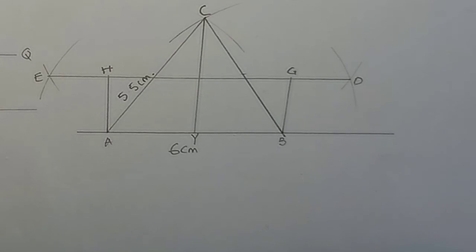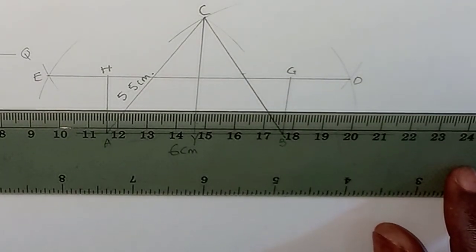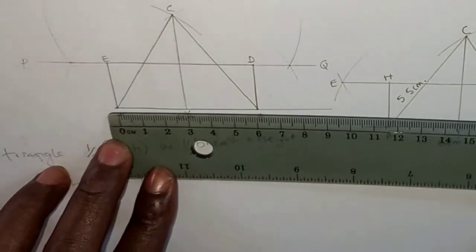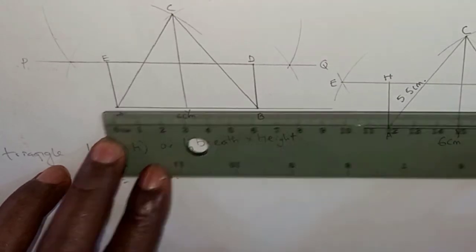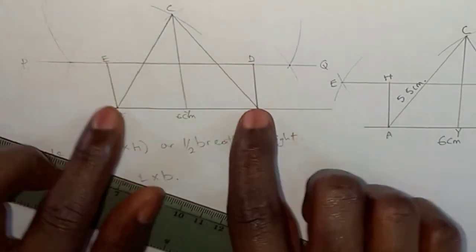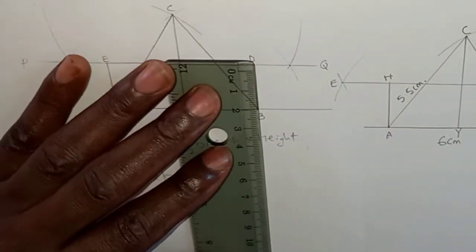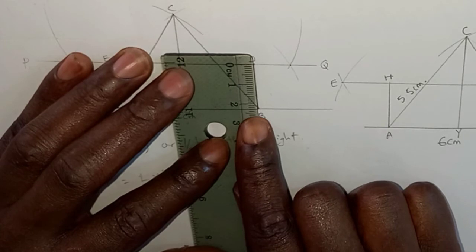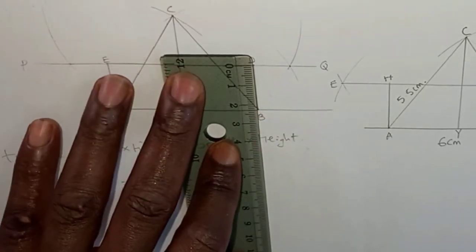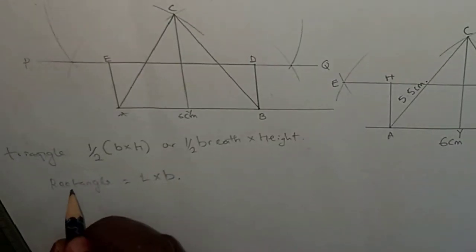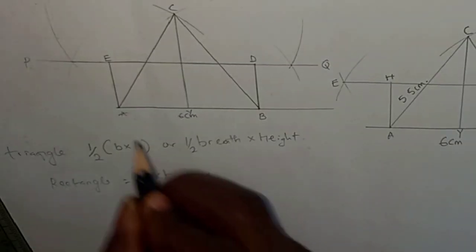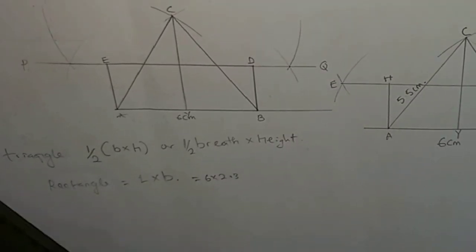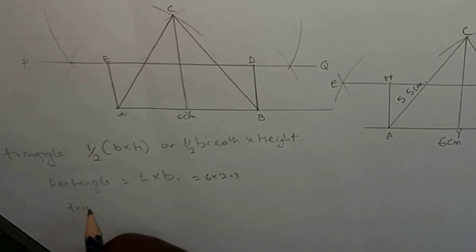Let's confirm if what we have drawn is actually correct. From my initial drawing, the base is 6 centimeters. For the rectangle EDBA, the length is 6 centimeters and the breadth is 2.3 centimeters. Now for the triangle, the area equals half times base times height.